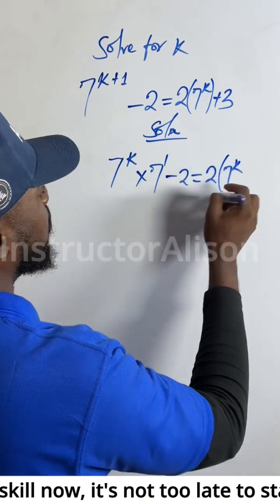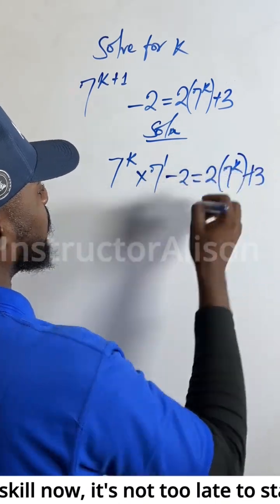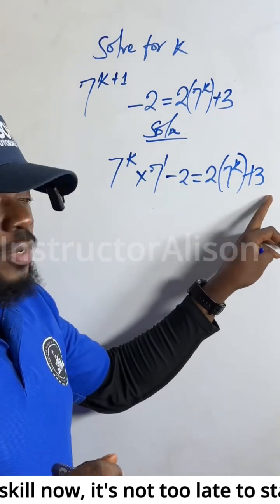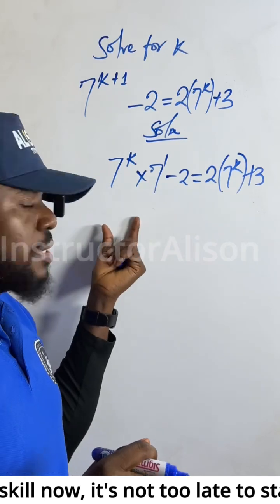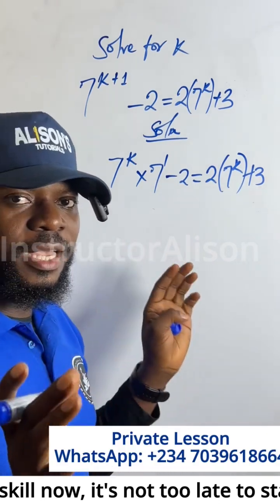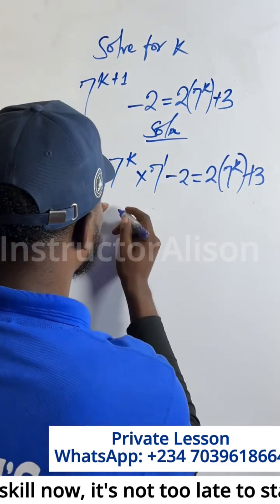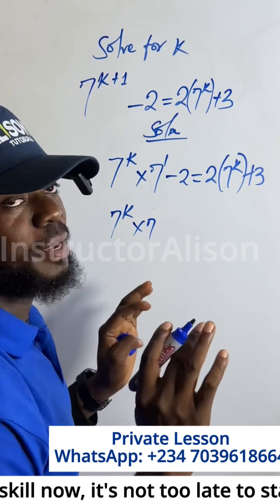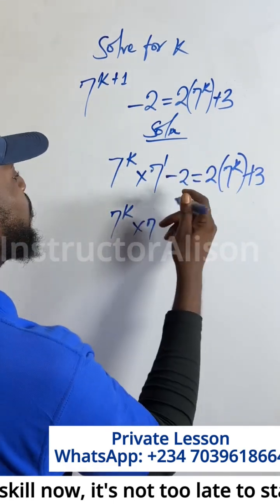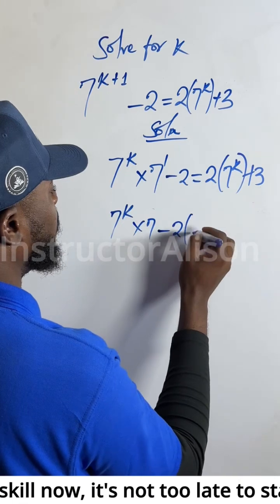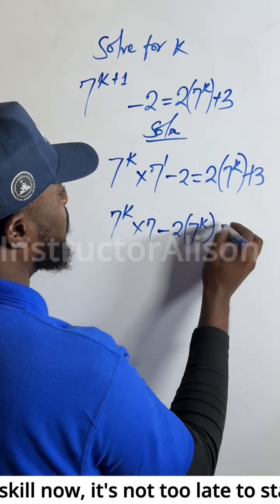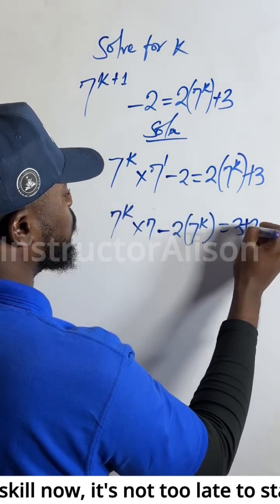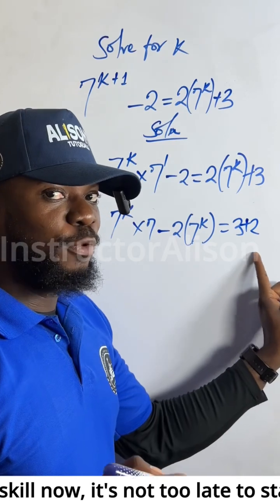Then minus 2 equals this one: 2 times 7 to the power of k. And 2 into 7 to the power of k plus 3. Now what I will do — this negative 2, make it go join this 3 over there. Make this one get 7 to the power of k, come this side. If I subtract this one from both sides, I get minus 2 times 2 into 7 to the power of k equal to 3. Then add 2 to both sides — plus 2. You're going to see 5 show up here.